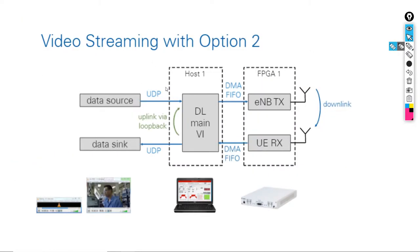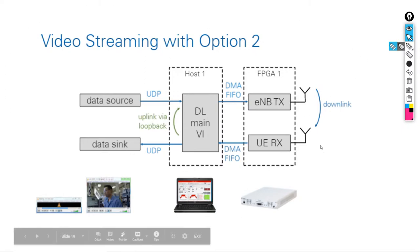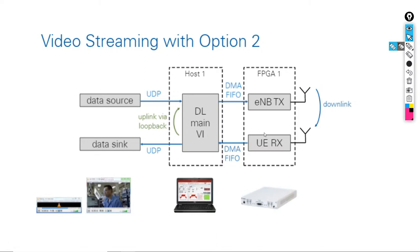For the single-USRP case, you have the downlink and uplink via loopback, and you can separate the antennas. This example is for testing and prototyping purposes, not for full practical deployment.